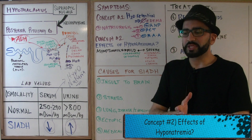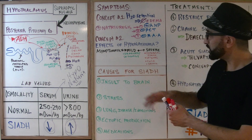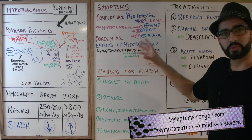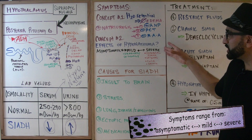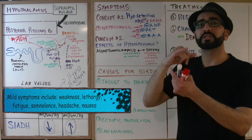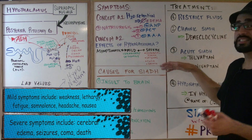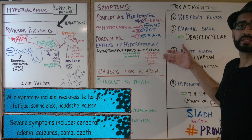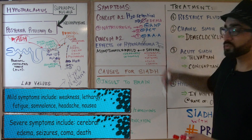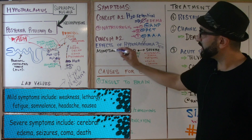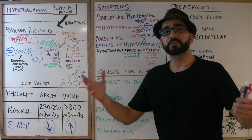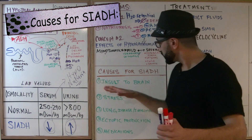Not all patients with hyponatremia will present with symptoms — it's a spectrum. Some patients are asymptomatic, others have mild symptoms like weakness and lethargy. As it becomes more severe and dangerous, patients may present with cerebral edema, seizures, coma, and even death. That's why it's critical to decide whether to treat the patient based on symptom severity and sodium levels.